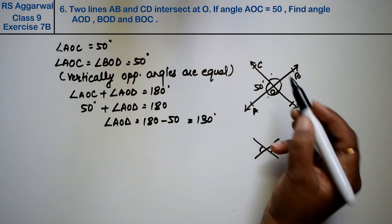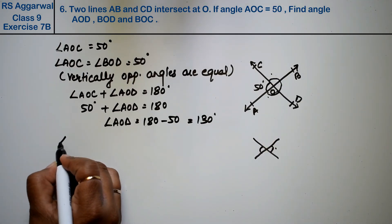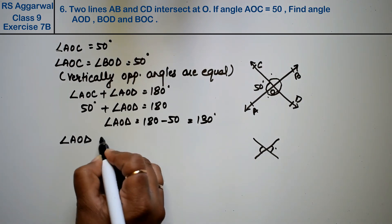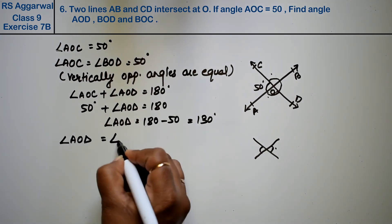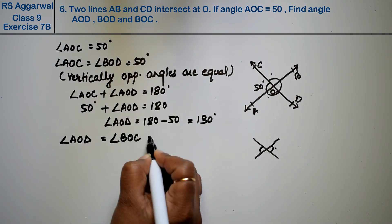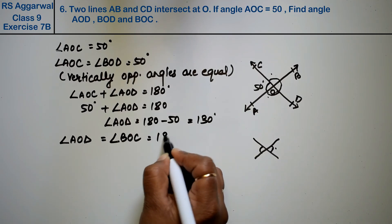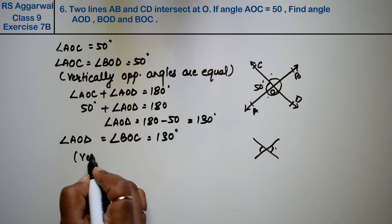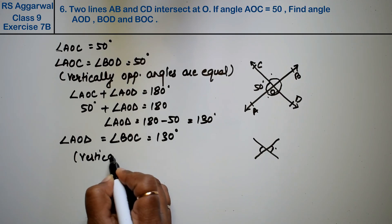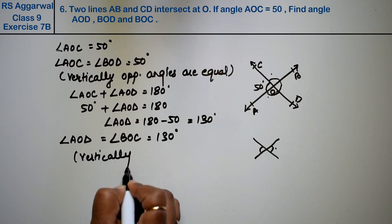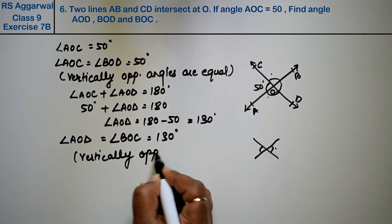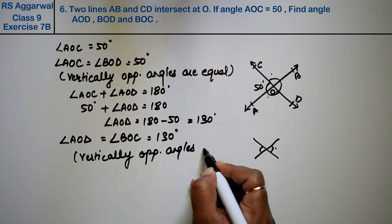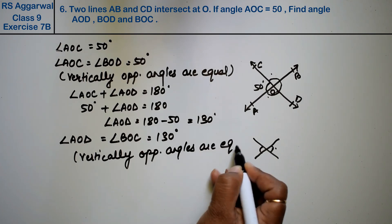This angle and this angle are vertically opposite angles. So angle AOD is equal to angle BOC, which equals 130 degrees. Why? Because vertically opposite angles are equal.